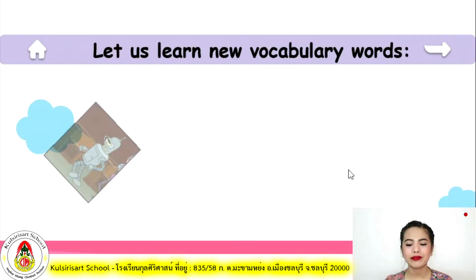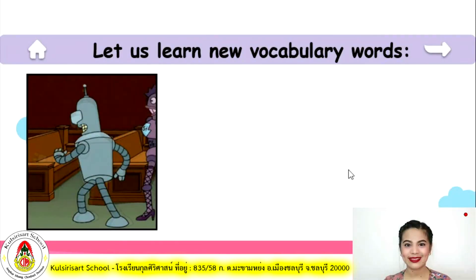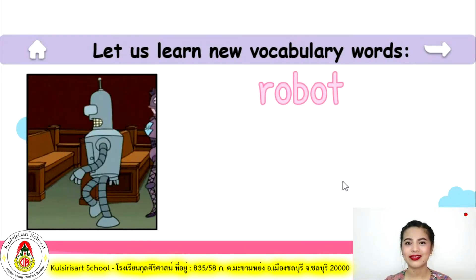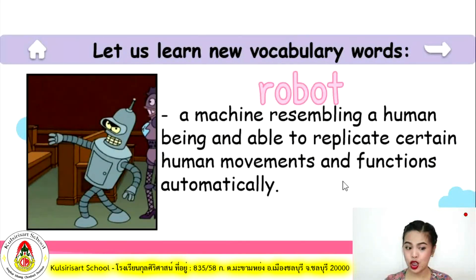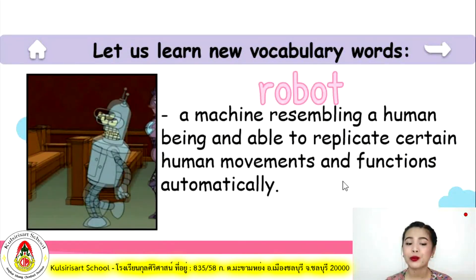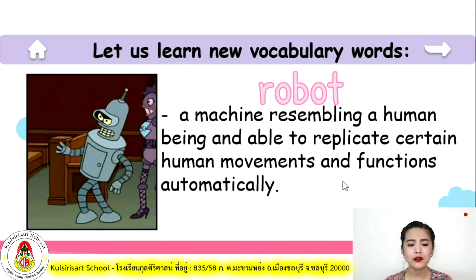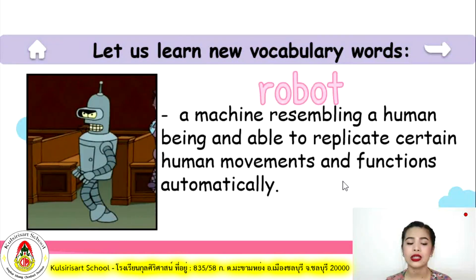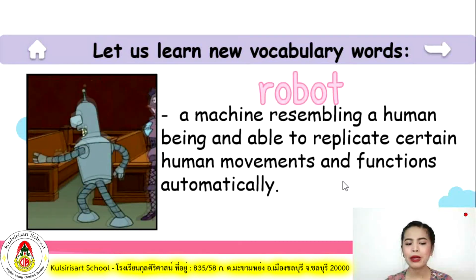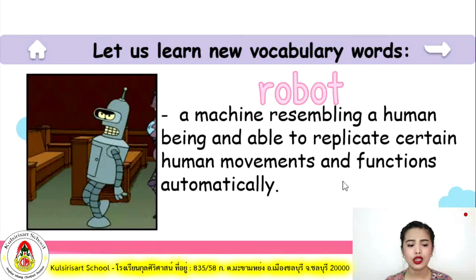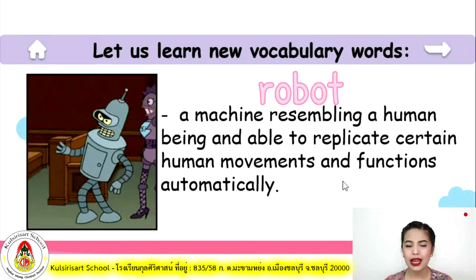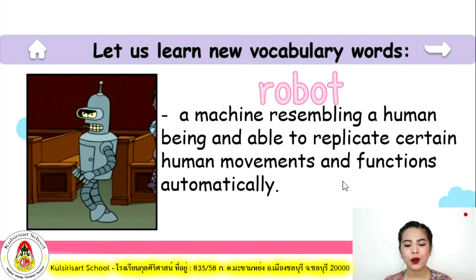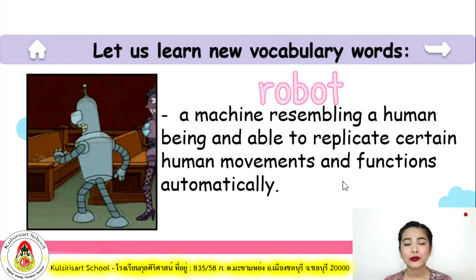What picture is that? That is a robot. A robot is a machine resembling a human being and able to replicate certain human movements and functions automatically or electronically. So those are robots — you can see them in the picture.